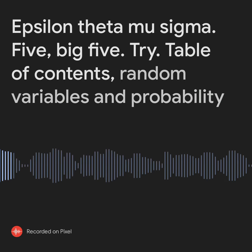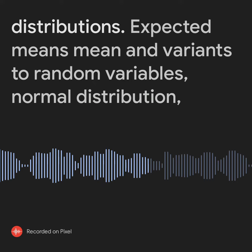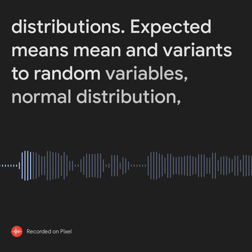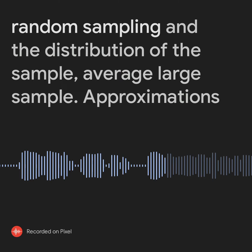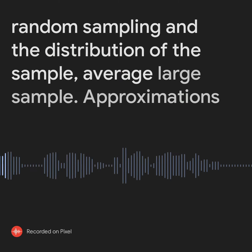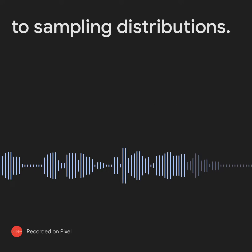Table of contents: random variables and probability distributions, expected means, mean and variance, two random variables, normal distribution, random sampling and the distribution of the sample average, and large sample approximations to sampling distributions.